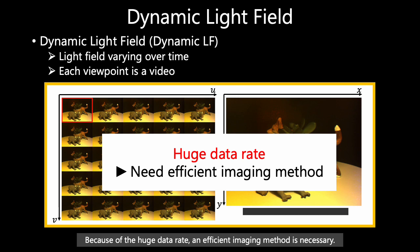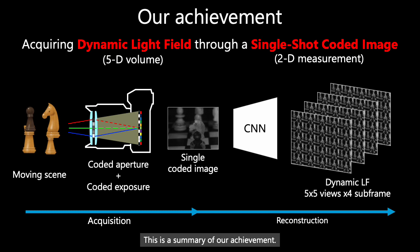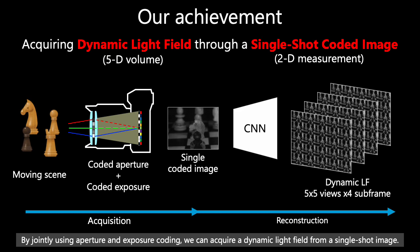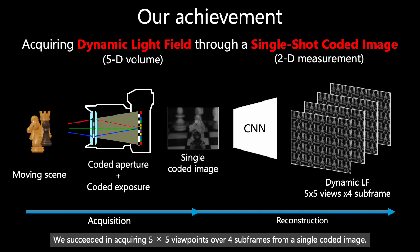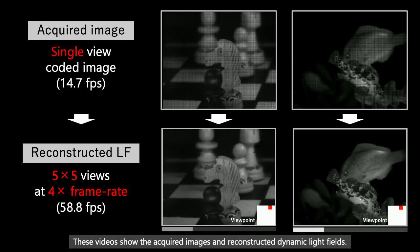This is a summary of our achievement. By jointly using aperture and exposure coding, we can acquire a dynamic light field from a single-shot image. We succeeded in acquiring 5×5 viewpoints over 4 subframes from a single coded image. These videos show the acquired images and reconstructed dynamic light fields.